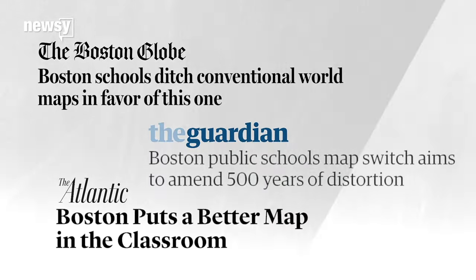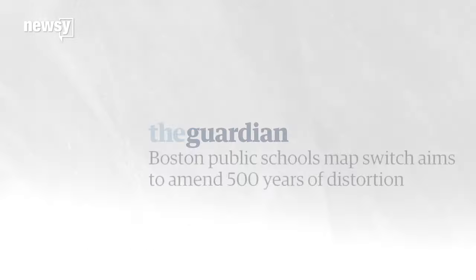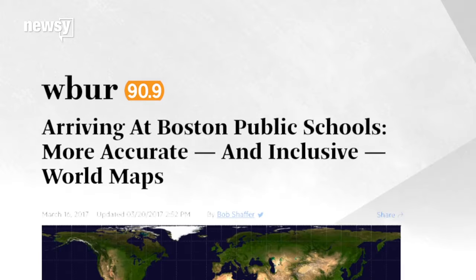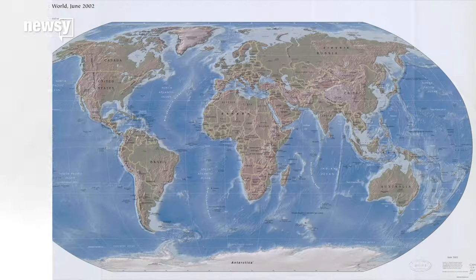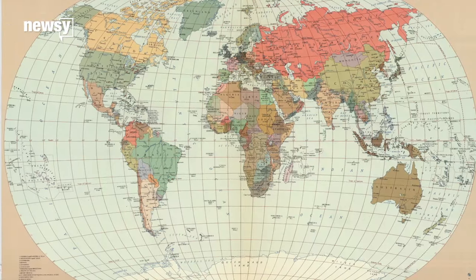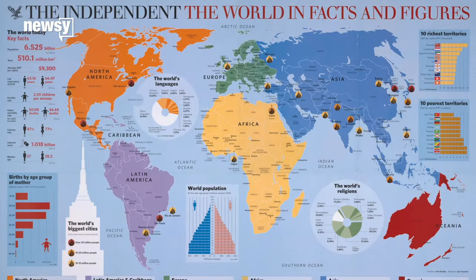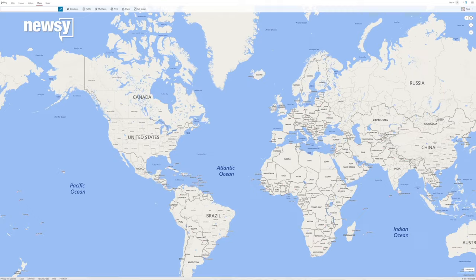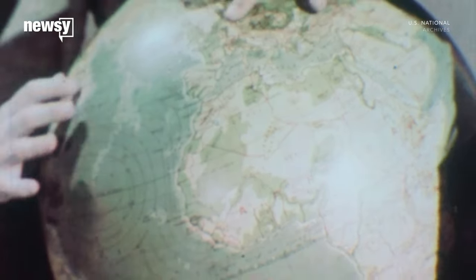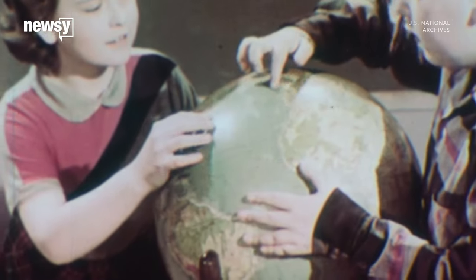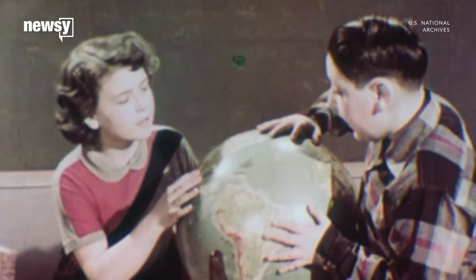The Gall-Peters hasn't gone away. Boston Public Schools recently said it will now use the Gall-Peters in classrooms to, quote, decolonize the curriculum. But it's not like the Gall-Peters is replacing all maps. You can find different types of maps everywhere — the UN logo has an azimuthal projection, and a globe scene appears in the background of CBS's evening news broadcast. But if you're really concerned about how to look at the world, you should probably just buy a globe.